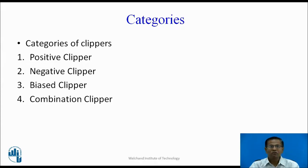There are four general categories of clippers: Positive Clipper, Negative Clipper, Biased Clipper, and Combination Clipper. Positive Clipper, Negative Clipper, and Biased Clippers are again divided into two different types: series and shunt. Whereas the Combination Clipper is the combination of both positive clipper and negative clipper.